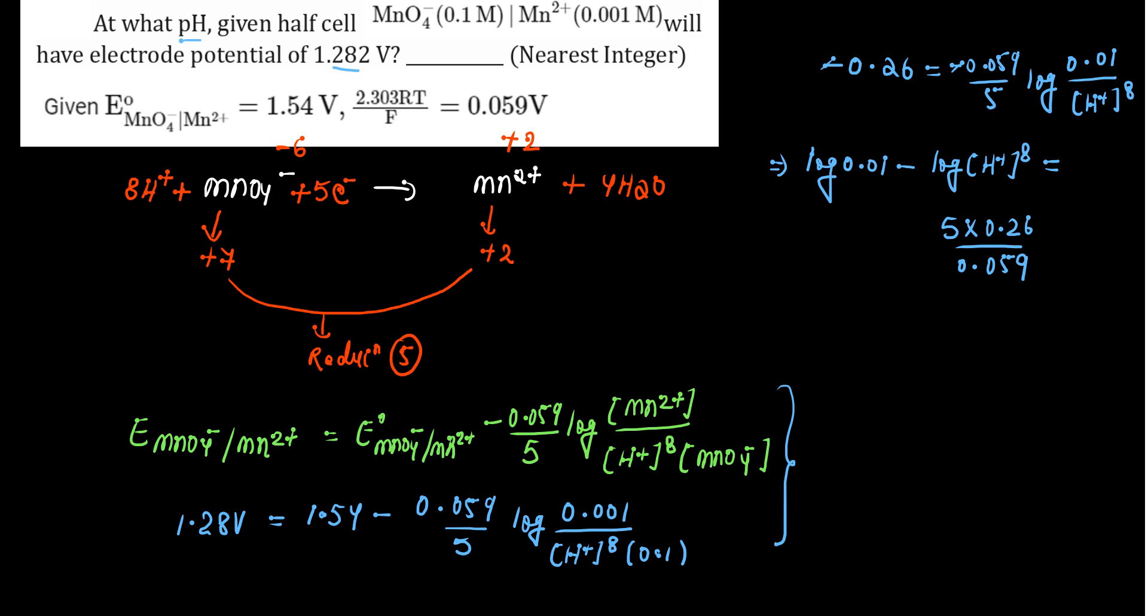So minus log of H plus to the power 8. The value jo hai, minus log of H plus to the power 8 is equal to 5 into 0.26 upon 0.059 plus 2. Minus log of H plus, so minus 8 log H plus.